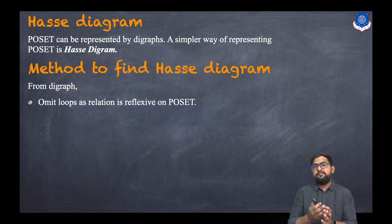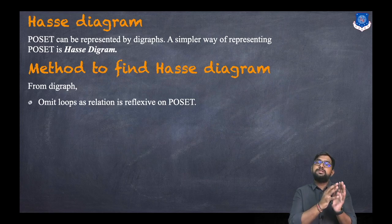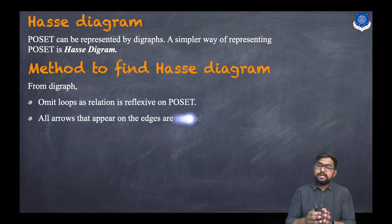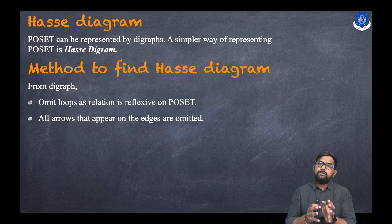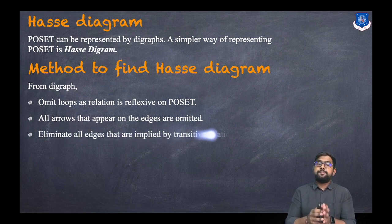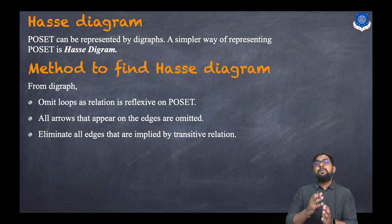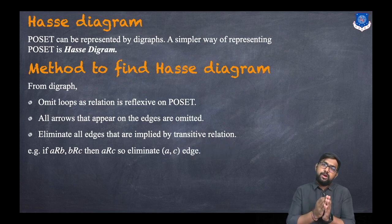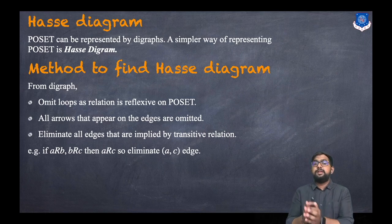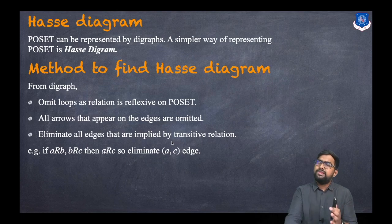The first step is to omit loops, as the relation is reflexive on a poset — so remove all self-loops. The second step is to omit all arrows on the edges. The third step — and this is important — is to eliminate all edges implied by the transitive relation. For example, if A is related to B and B is related to C, then by transitivity A is related to C, so we remove that transitive edge AC.